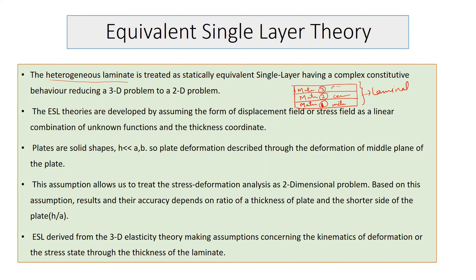We have different material properties along the thickness direction, which we assume as z with total height h. In the z direction, properties vary: from 0 to h1 the material is homogeneous, from h1 to h2 the properties differ, and from h2 to h3 they differ again. When crossing from one interface to the next, the material properties change. Therefore, the laminate is called heterogeneous.